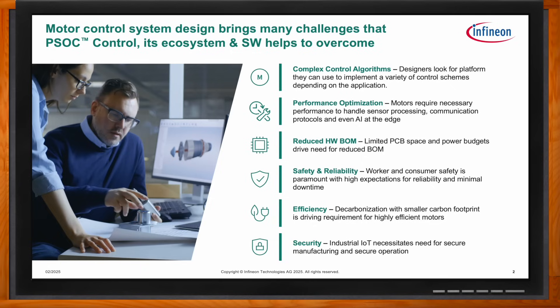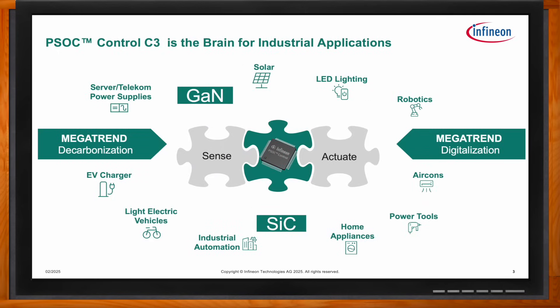Infineon is following two mega trends in the industrial space: decarbonization as a method to reduce carbon footprint through greener, more efficient systems, and digitalization as a method to implement digital systems for control, connectivity, data generation, and eventually AI at the edge. Microcontrollers are the brain of these digital systems for many industrial applications.